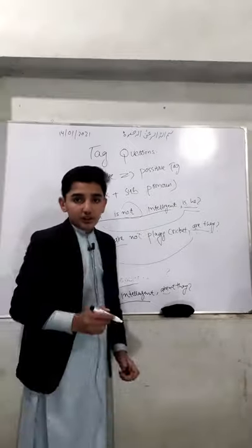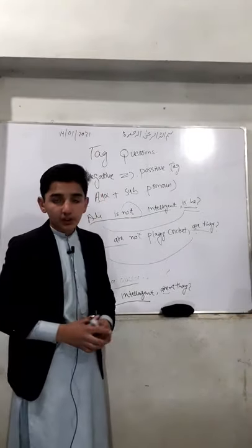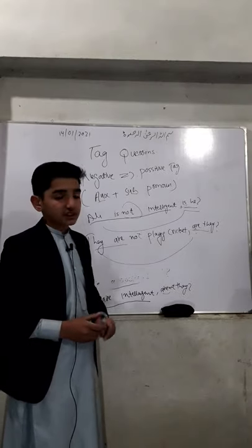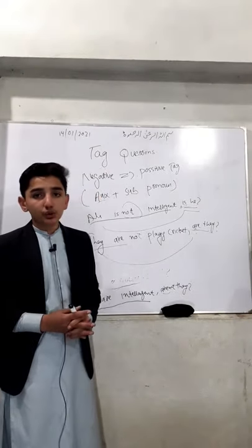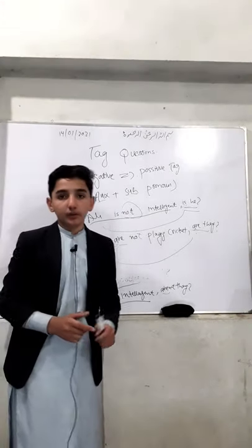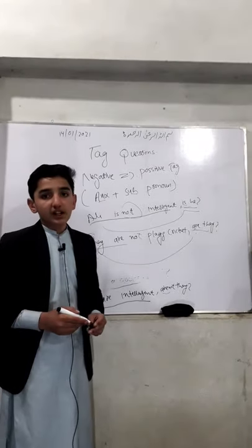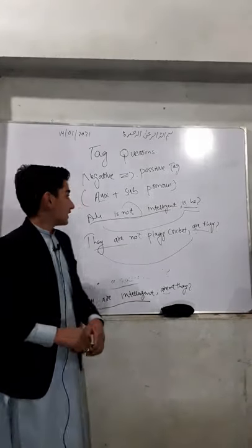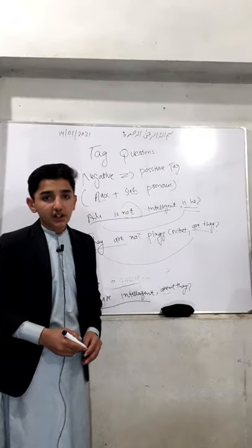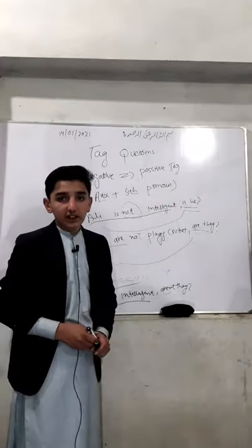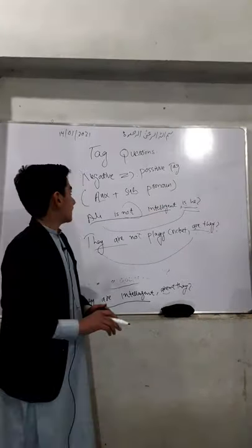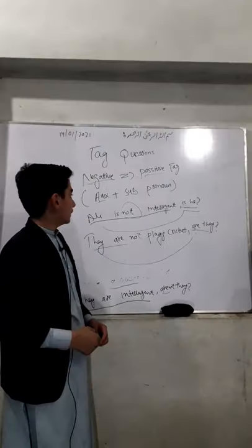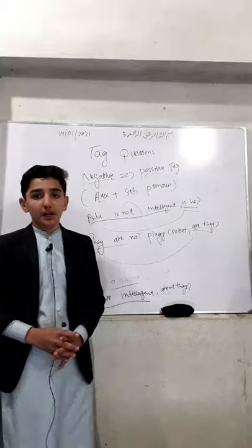To recap: tag questions are also called short questions or text questions. 'Tag' means sign or mark. Tag questions are used to show confirmation or agreement, to check whether the action is right or not, whether it is true or not. We have two structures: first, whenever we have a positive sentence we use a negative tag; second, whenever we have a negative sentence we use a positive tag. Thank you so much, see you next time with another topic.